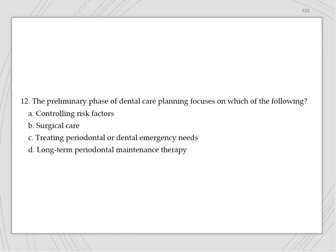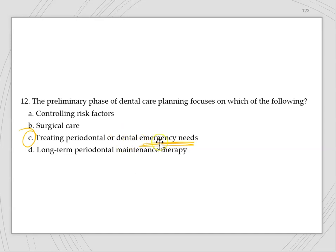There are five phases of periodontal treatment. Phase zero, the preliminary phase, is the assessment and emergency care phase — pain relief, treating emergencies, extraction of hopeless teeth. Phase one is non-surgical periodontal therapy — this is what hygienists do: education, dietary counseling, tobacco cessation, fluoride, sealants, debridement. Phase two is surgical therapy, done by a periodontist. Phase three is restorative therapy — what dentists do. Phase four is periodontal maintenance.